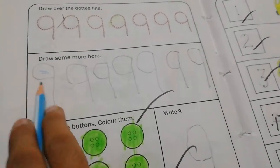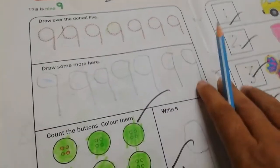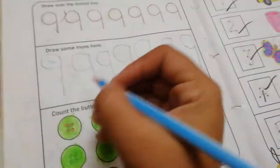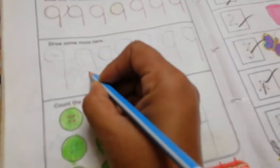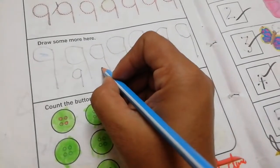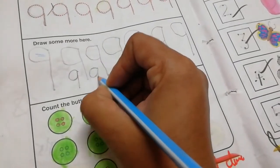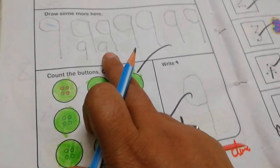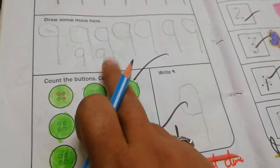Dear student, you also draw some more lines here. First of all, you make a round and then standing line. Round then standing line. This is number 9. You also make like this.